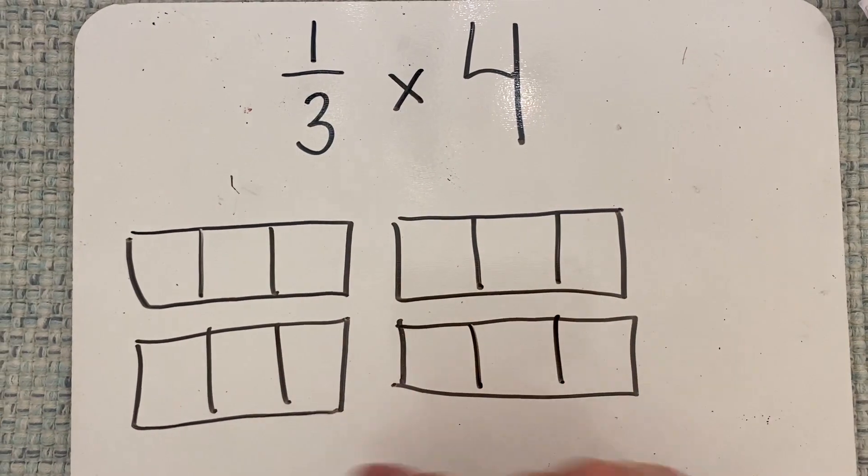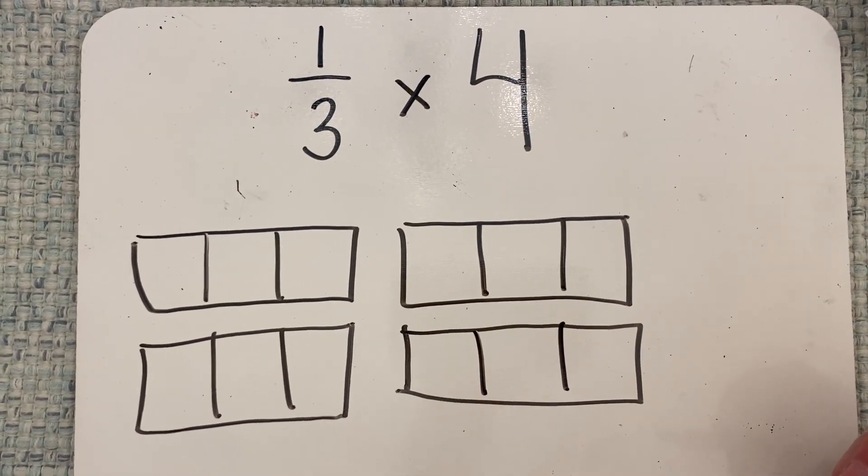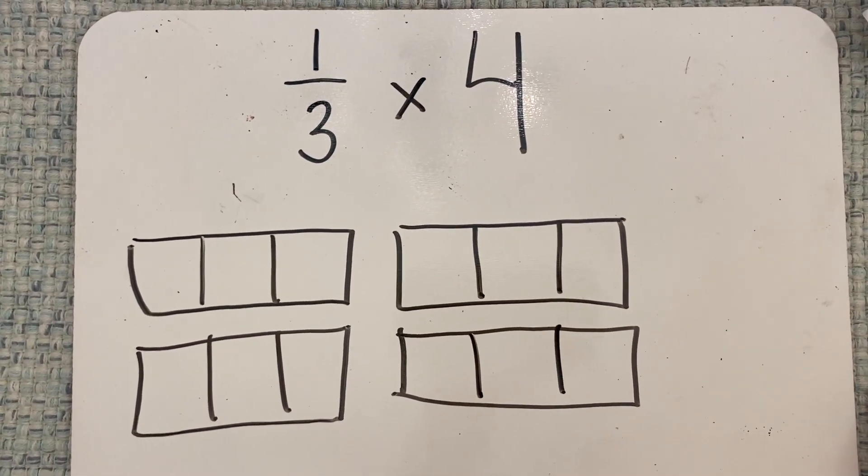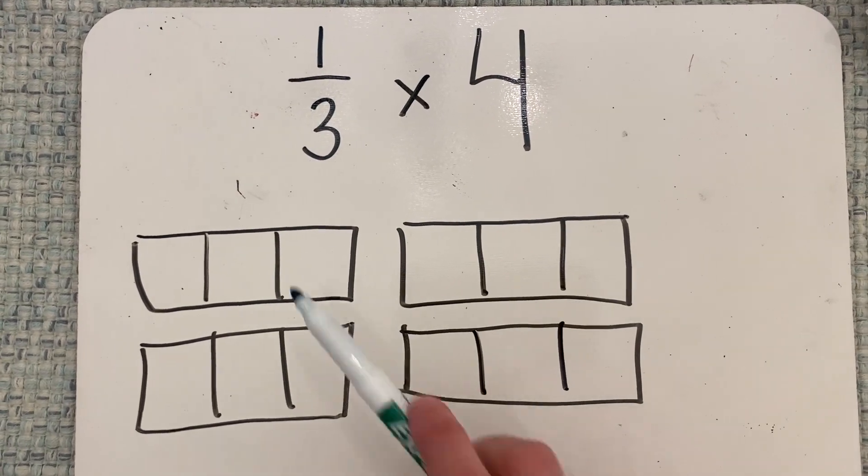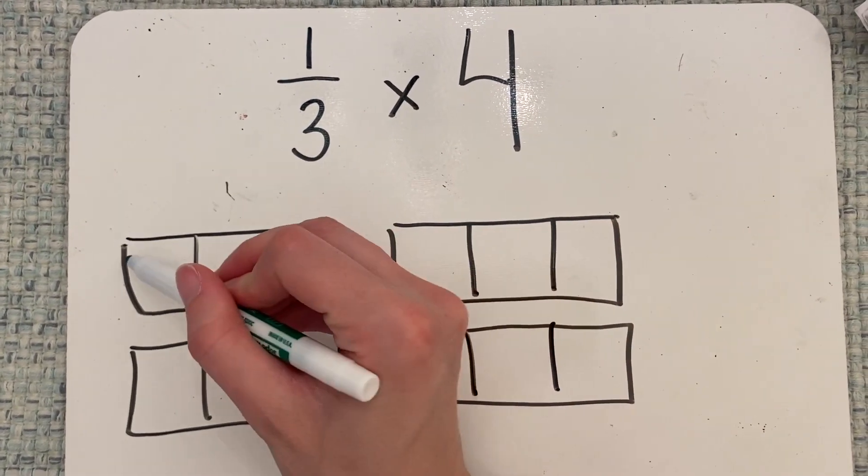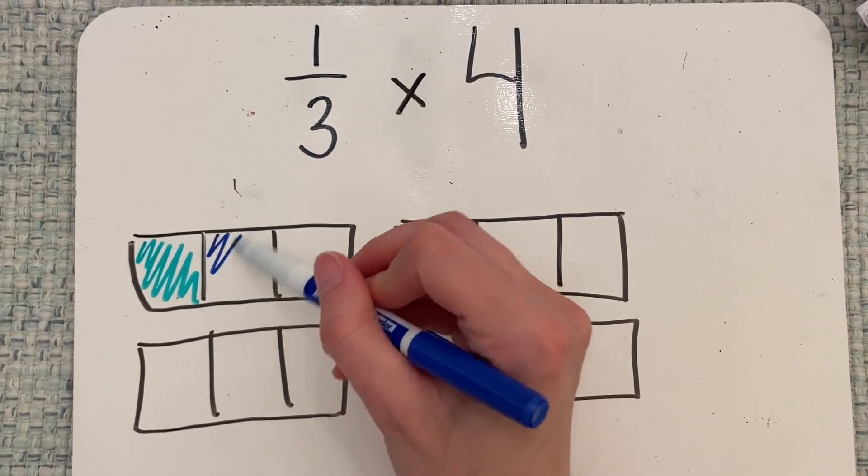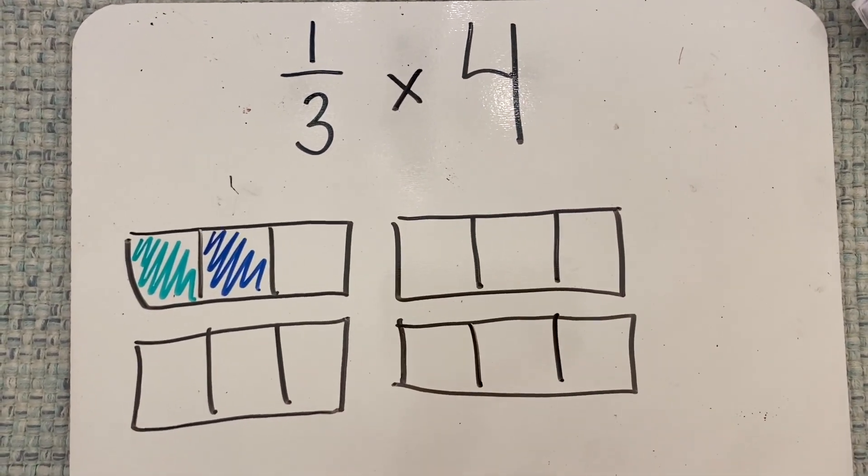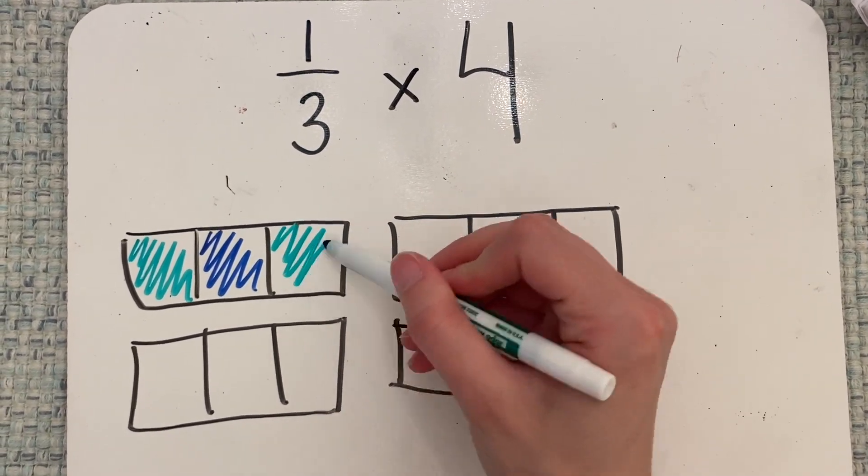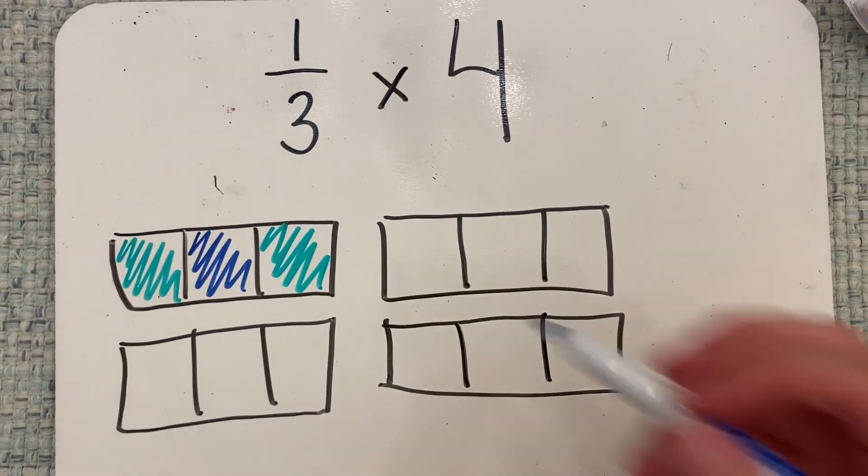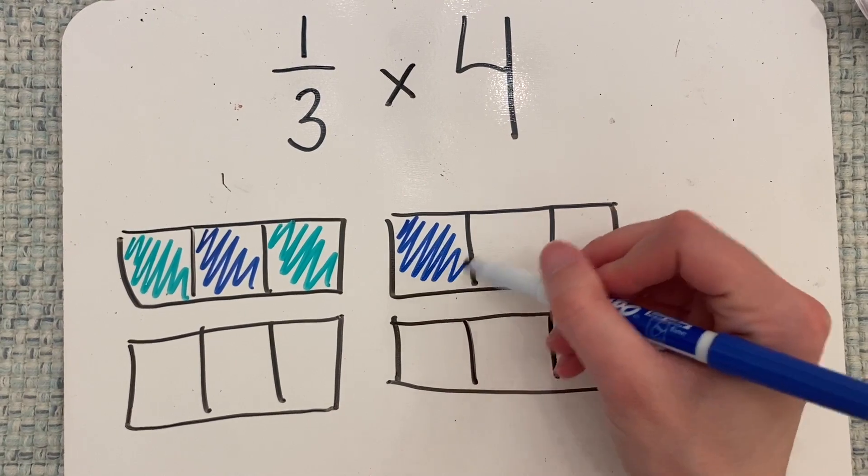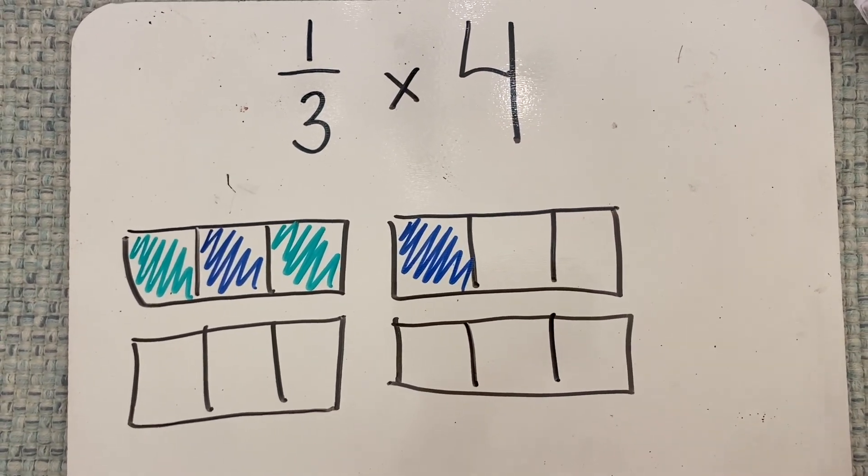So if this is everything I have currently, I have four wholes split into thirds, I want to show that I'm finding one-third of this. So I'm going to color in one-third, switch colors. I'm going to do this four times. To show my different groups, I switch colors.